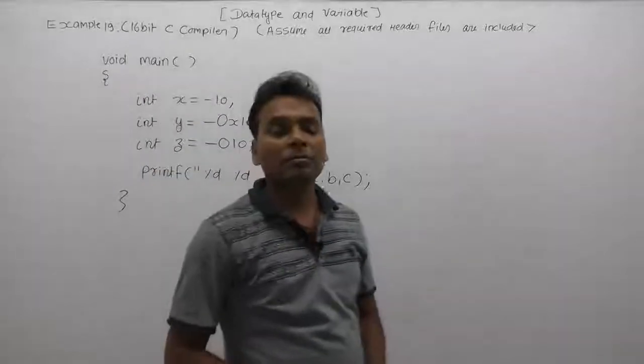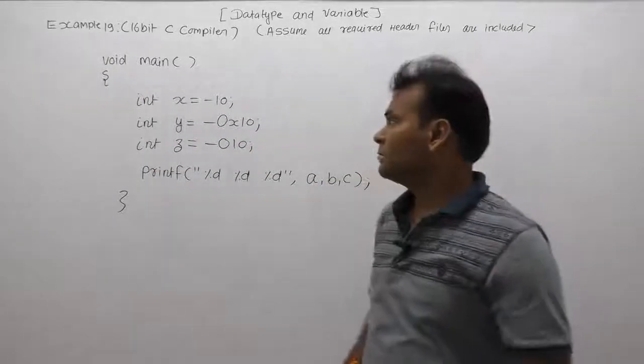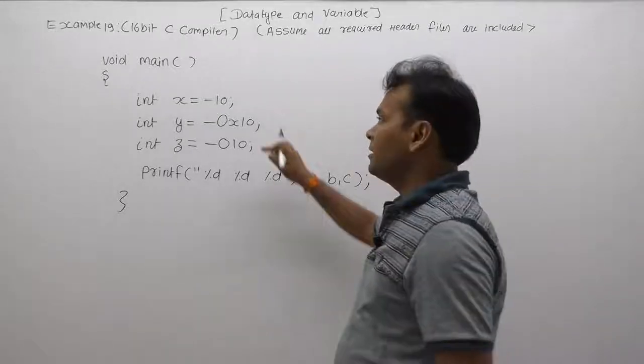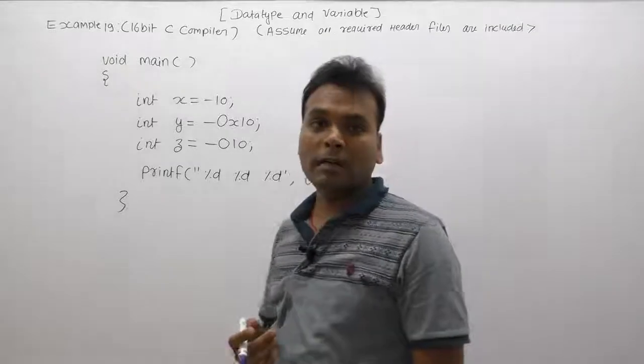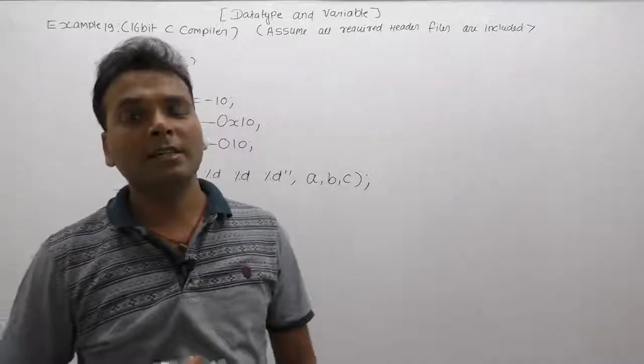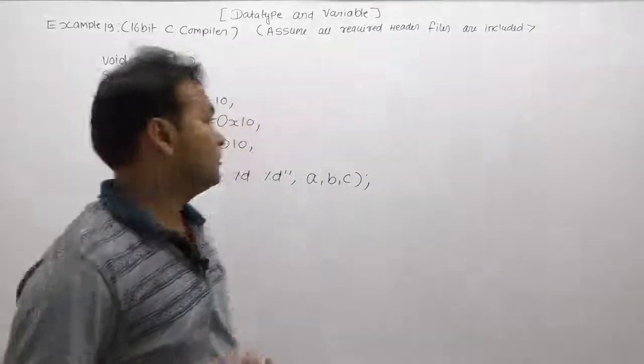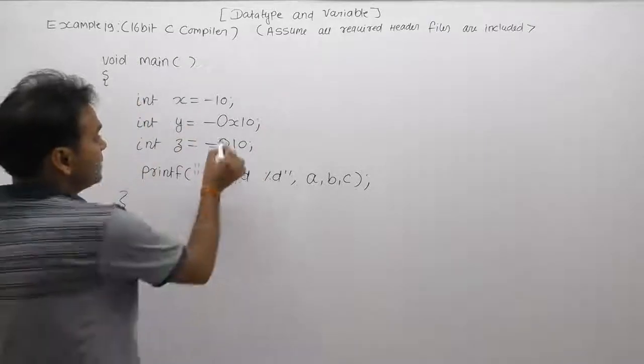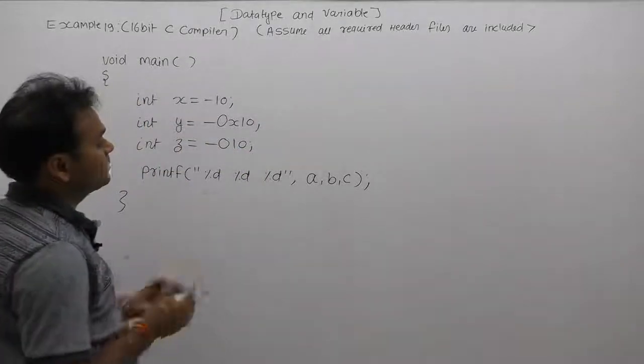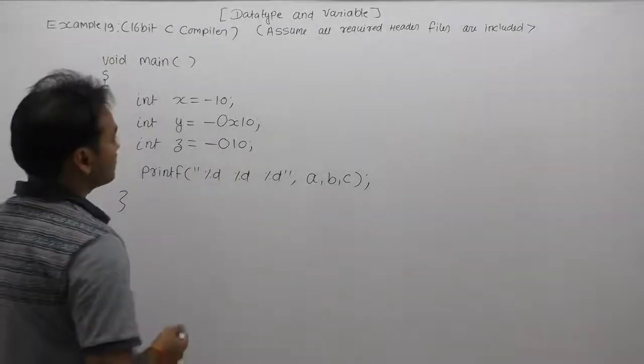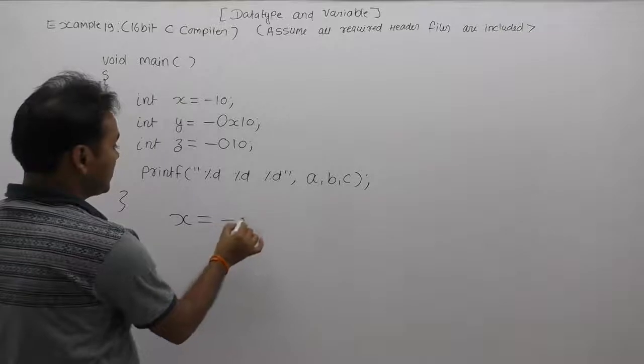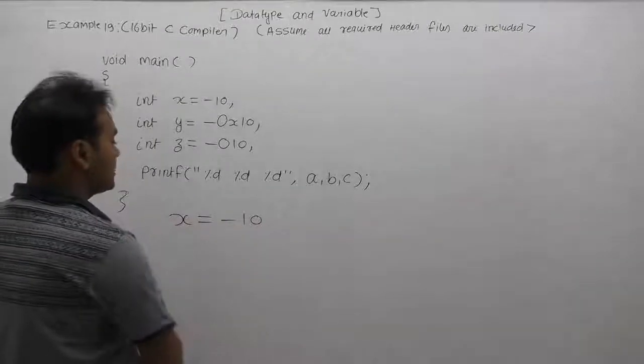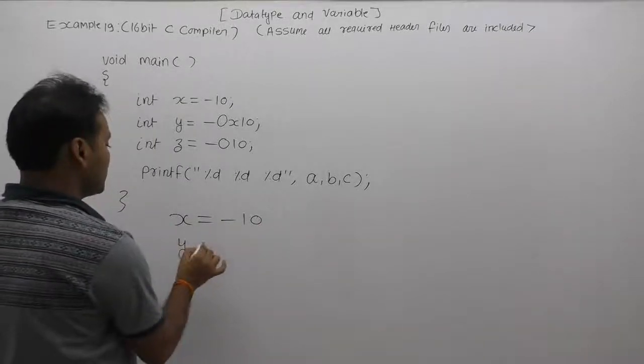Next one, what is the result of the given program? In that case we are assigning literal integers in different number systems. As we know, by default the number system is considered as decimal number system. Any number starting with 0x is considered as hexadecimal, same as octal. The first case is correct, directly 10 or minus 10.